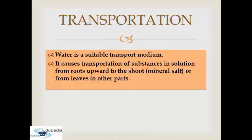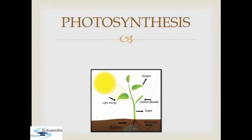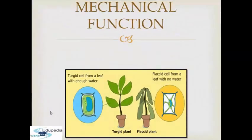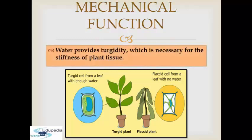Water is transported from leaves to other parts as well. Next is photosynthesis — water is used as a raw material in the synthesis of glucose. The third purpose is the mechanical function. Water provides turgidity which is necessary for stiffness of plant tissues. As you can see in this figure, this is a turgid cell from a leaf with enough water, and this is a flaccid cell from a leaf with no water. With this figure you can imagine the importance of water in plants.